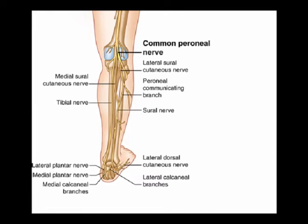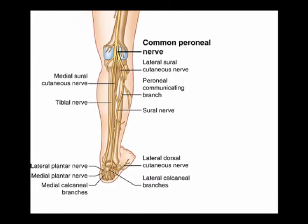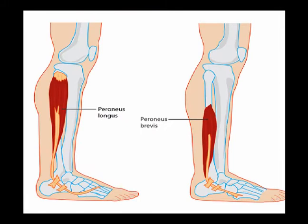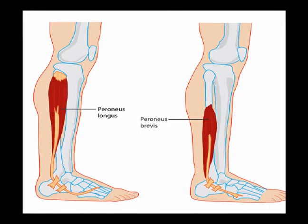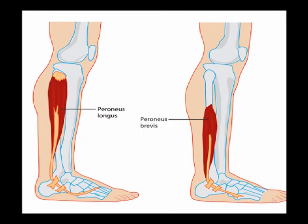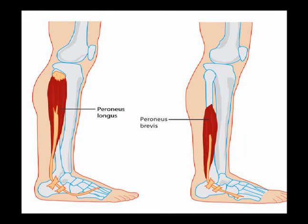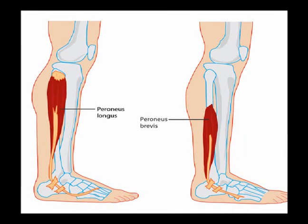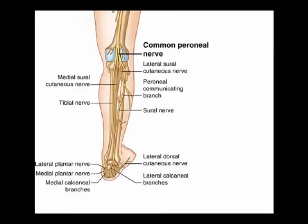The common peroneal nerve is also known as the common fibular nerve. These branches of the common peroneal nerve supply motor and sensory innervation to the anterior and lateral aspects of the lower leg.